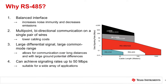RS-485 is a balanced transmission standard, meaning it requires two signal lines whose voltages are the inverse of one another. This offers two advantages for signal integrity. First, because the two signal lines are implemented with twisted pair cable, noise from external sources couples equally into both signal lines as common mode noise, which is rejected by the differential receiver. Second, because the two signal lines switch inversely to one another, the electromagnetic field emitted by each line is opposite of each other, helping to attenuate the noise emitted.